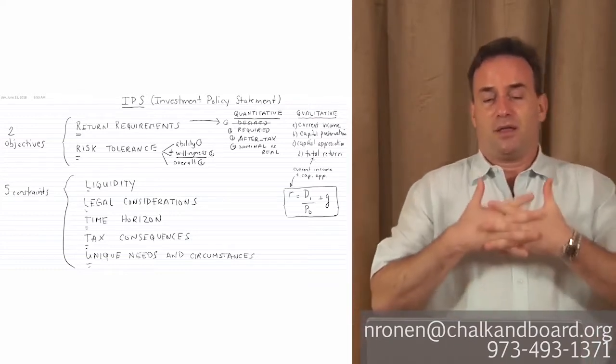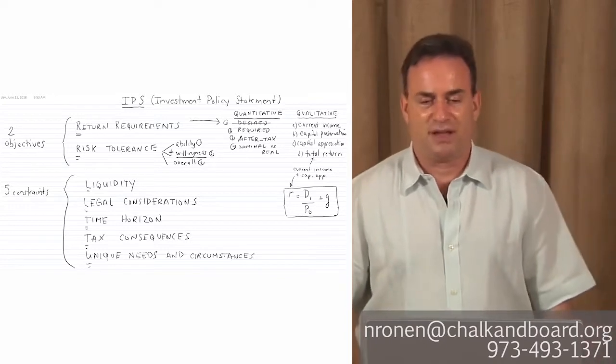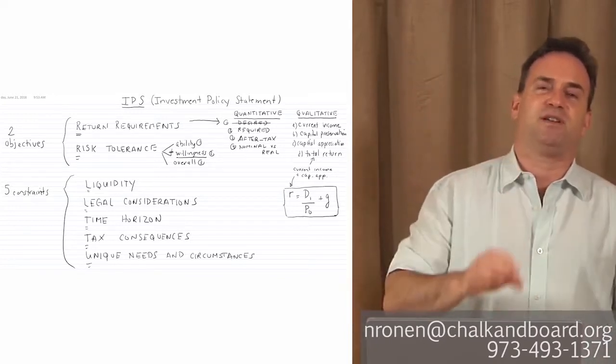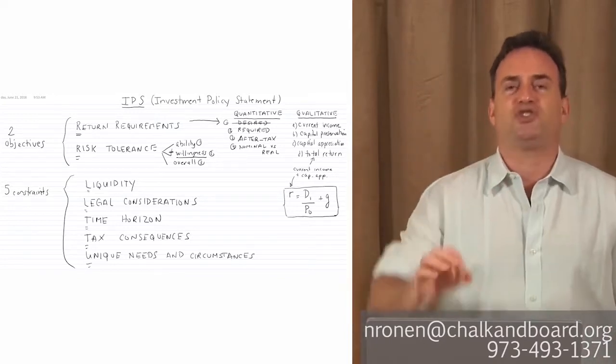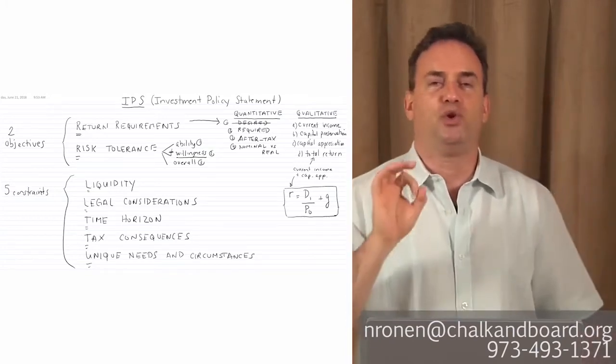The IPS needs to provide two objectives and five constraints. You must understand that an IPS must be developed for each client because each client is different or unique.